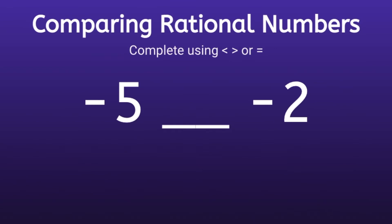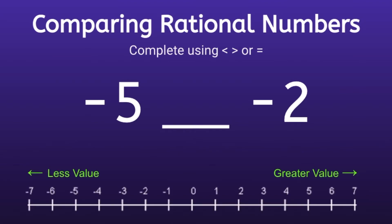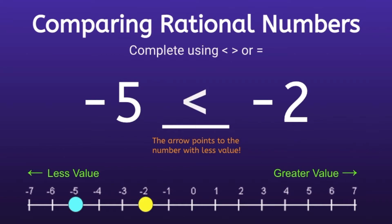Example number 2: negative 5 and negative 2. So let's pull up our number line and graph both of these numbers. After graphing we can see that negative 5 is further to the left, so negative 5 will have less value. The arrow should always point to the number with less value, so the arrow will point to the left.